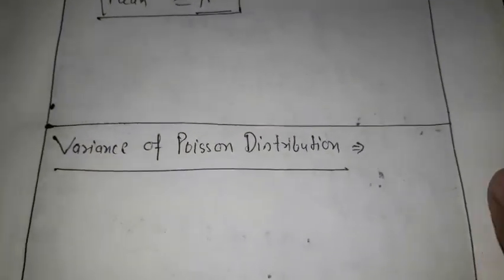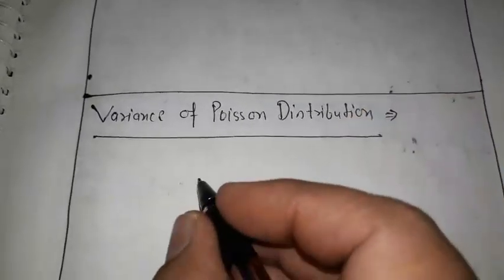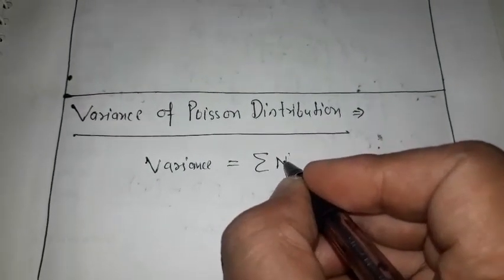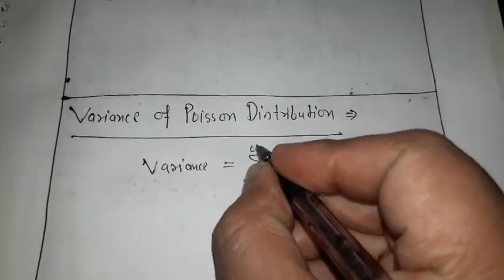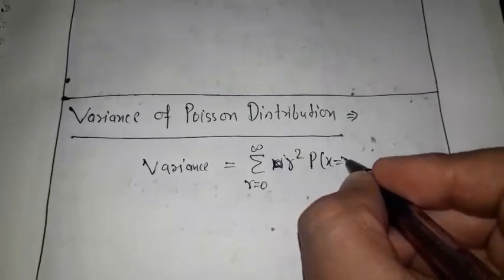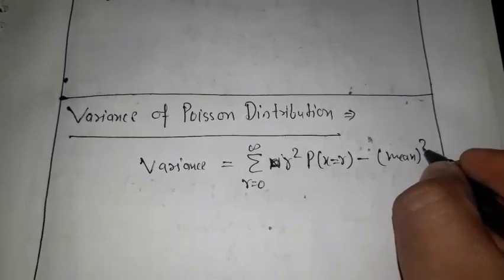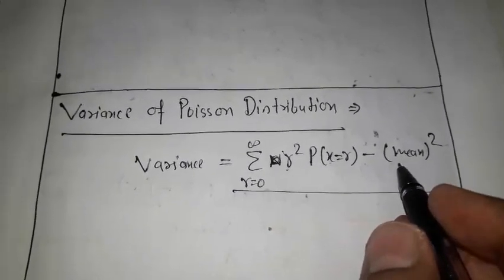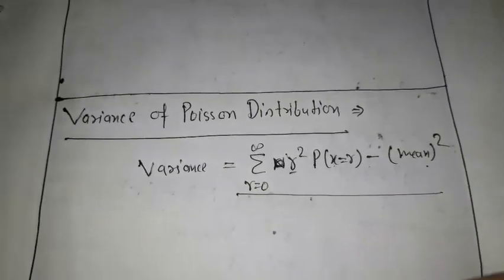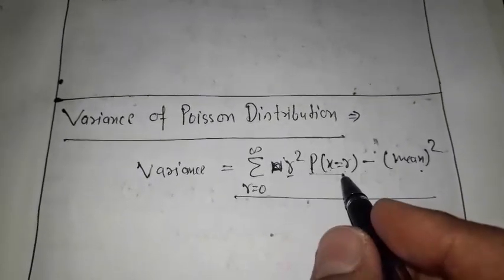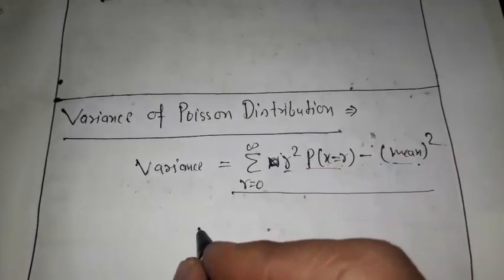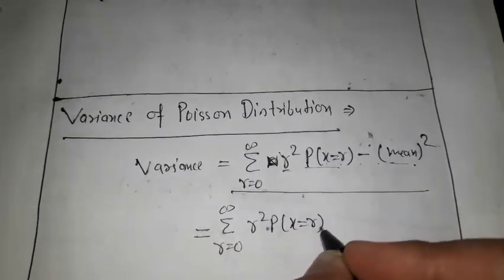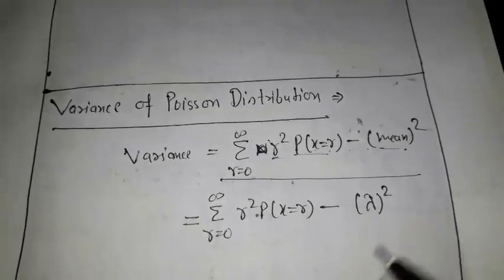Similarly, we now define the variance of the Poisson distribution in terms of lambda. The formula for variance is: variance equals summation r from 0 to infinity of r squared times p(x = r) minus mean squared. Here instead of n squared we use the number of successes r, and mean squared becomes lambda squared, since the mean of the Poisson distribution is lambda.